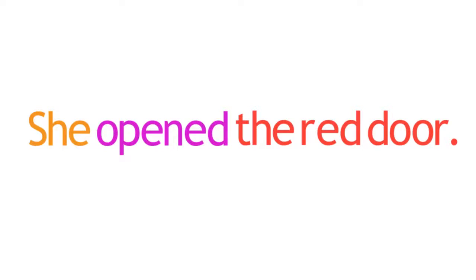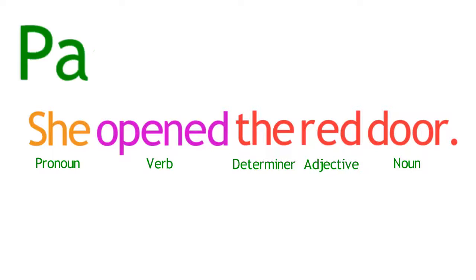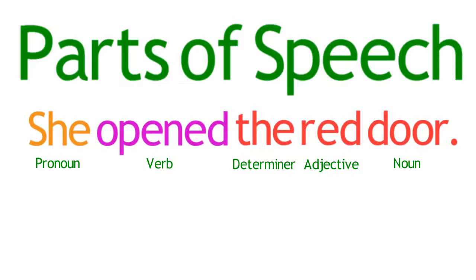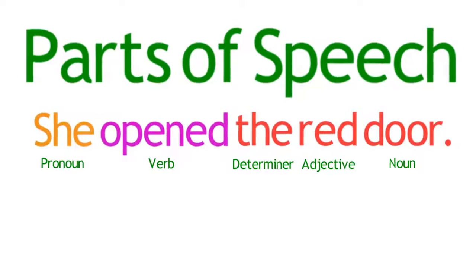As an example, consider the sentence: "She opened the red door." Each word in this sentence is one of the five types of words you know. These categories of words are called parts of speech. Generally speaking, in any sentence, every word can be identified as a specific part of speech.